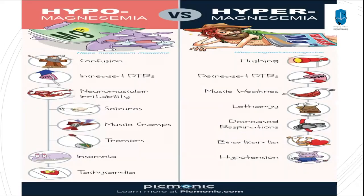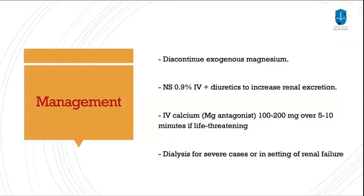This slide summarizes the differences between hyper- and hypomagnesemia. Hypermagnesemia features include flushing, decreased DTR, muscle weakness, lethargy, decreased respiration, bradycardia, and hypotension. For management of hypermagnesemia: discontinue any exogenous magnesium; start normal saline IV plus diuretics to increase renal excretion; and give IV calcium, which acts as a magnesium antagonist — 100 to 200 mg over 5 to 10 minutes. For life-threatening cases or in the setting of renal failure, dialysis should be considered.